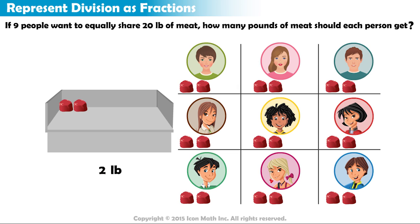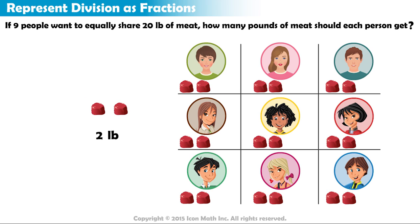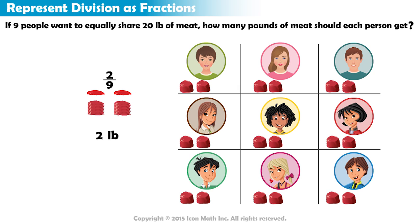How do we divide those remaining two pounds equally among nine people? A fair division is to cut each pound into nine equal amounts, and then give each person one part from each. In other words, each person gets one-ninth of a pound from one piece and one-ninth of a pound from the other, so both pieces together equal two-ninths of a pound.